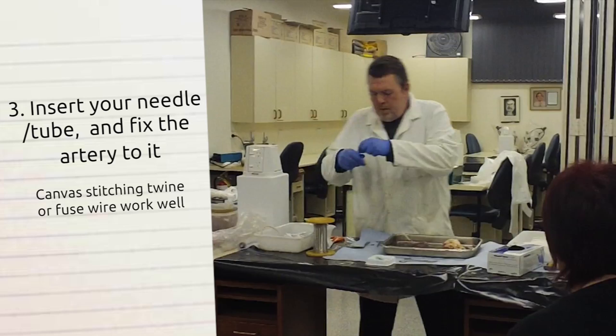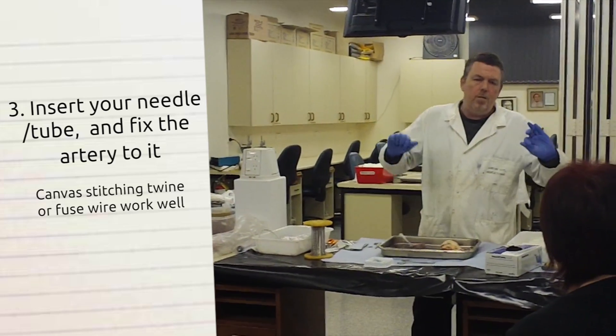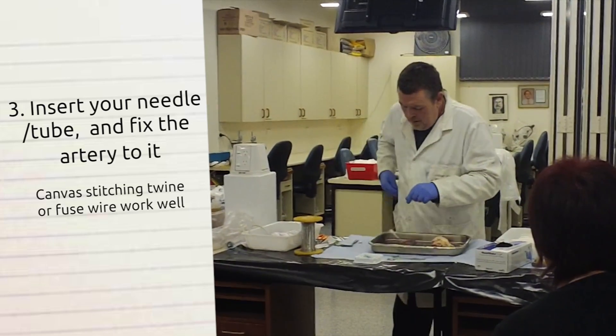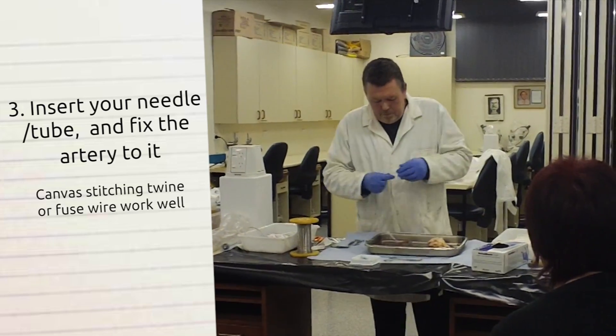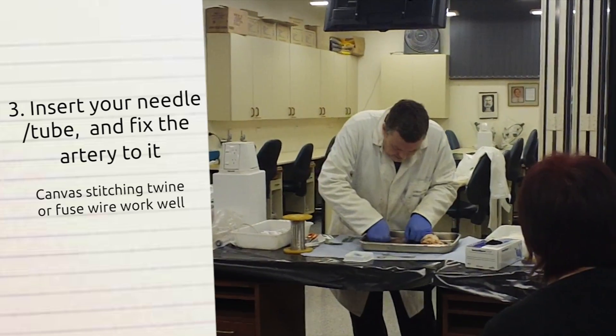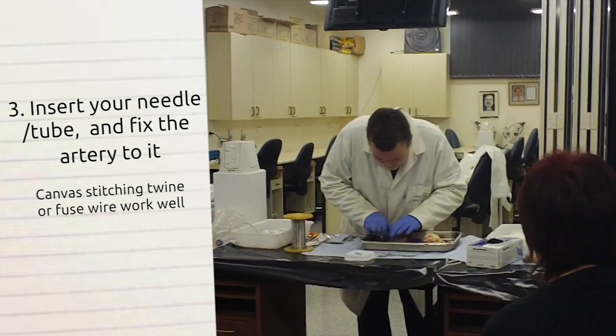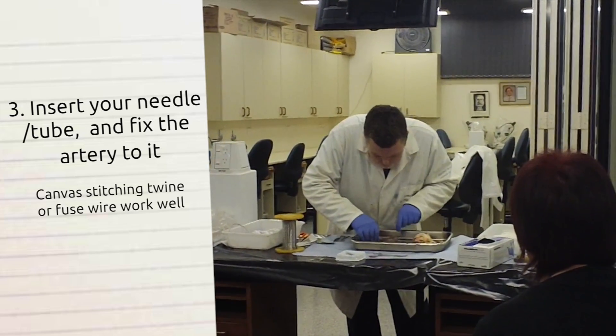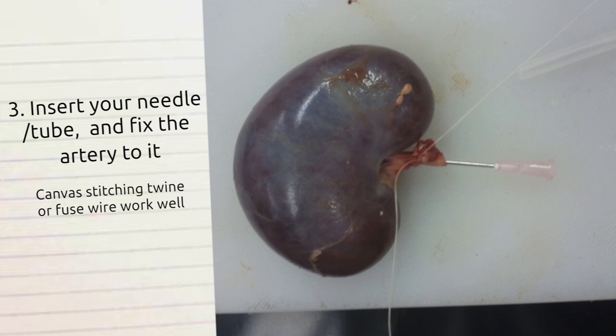What I'll do is grab a piece of string. This is really, you know, cotton, what you call it, canvas twine. Canvas stitching twine will do the trick nicely. You want to leave a little extra on there, so be generous. But the idea is to tie it off nice and tight and stop it from being able to let loose its resin.